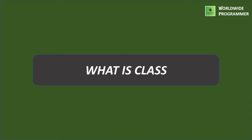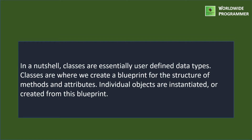Next feature is class. Objects contain data and code to manipulate the data. The entire set of data and code of an object can be made a user-defined data type with the help of a class. In fact, objects are variables of the type class. Once a class has been defined, we can create any number of objects belonging to that class. Thus a class is a collection of objects of a similar type. For example, a mango, apple, and orange are members of the class fruit. In a nutshell, classes are essentially user-defined data types — blueprints for the structure of methods and attributes from which individual objects are instantiated.